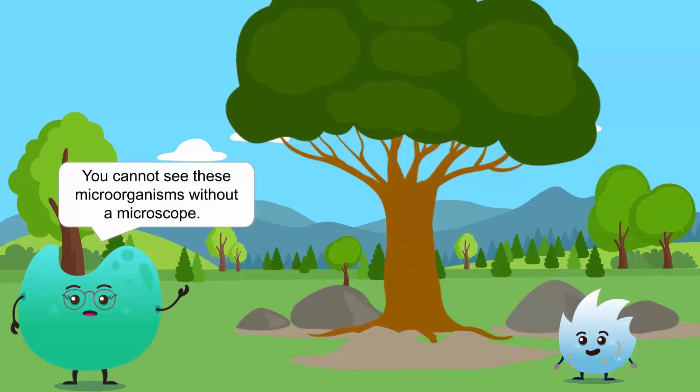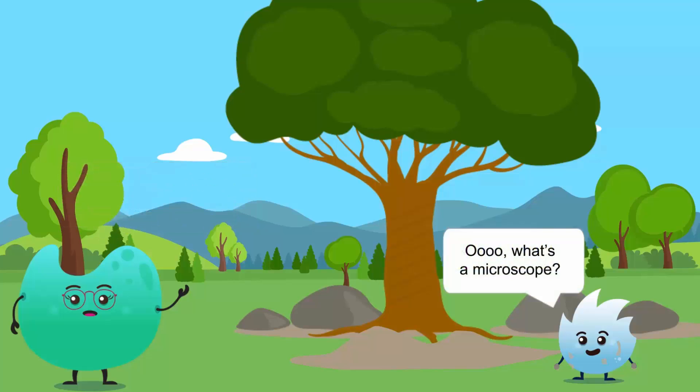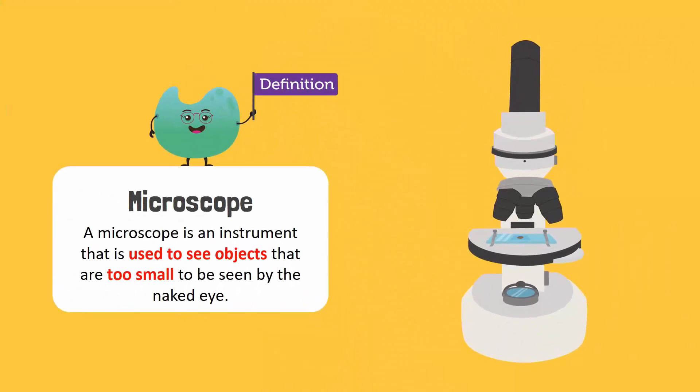You can't see these microorganisms without a microscope. Oh, what's a microscope? A microscope is an instrument that is used to see objects that are too small to be seen with the naked eye.